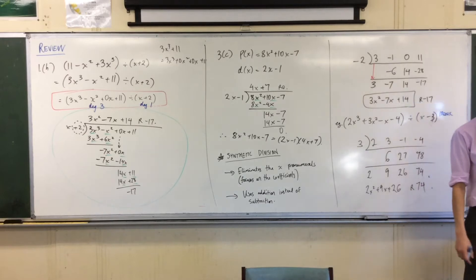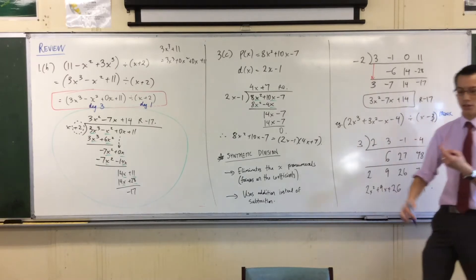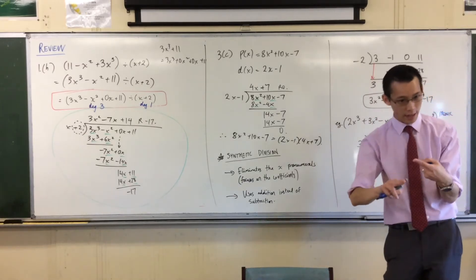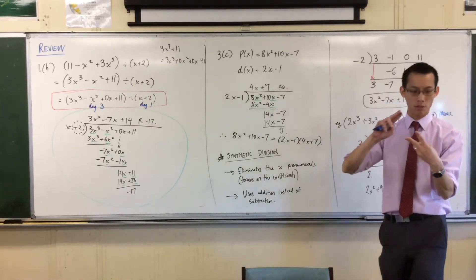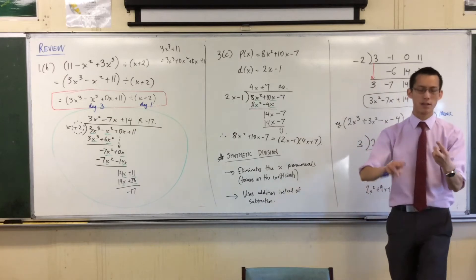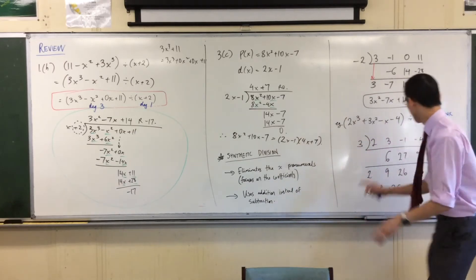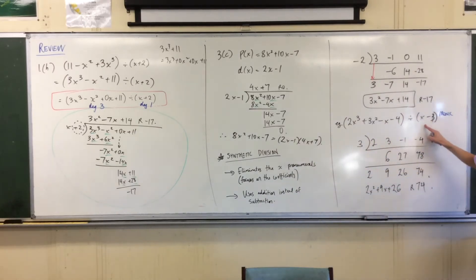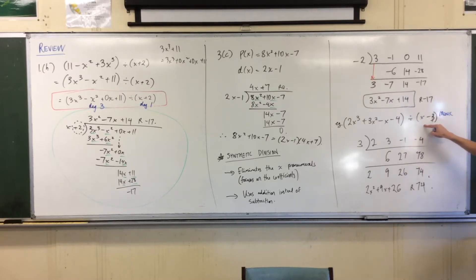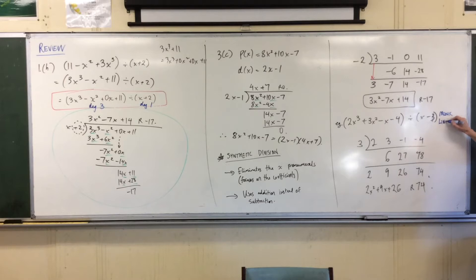Number two — remember when it's got degree two we call it quadratic, degree three is cubic, degree four is quartic. This is degree one — what's that called? If you graphed it, it would be a straight line: it's linear. So this method focuses on monic linear divisors.